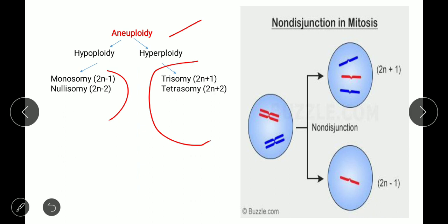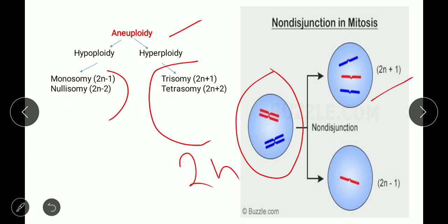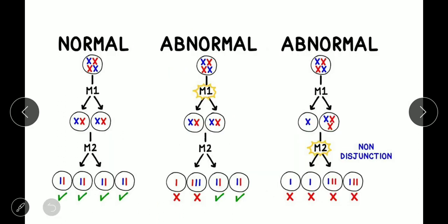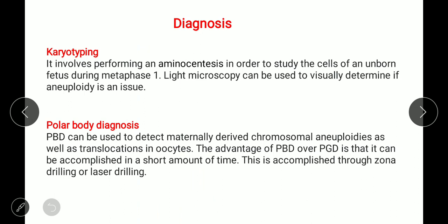In non-disjunction during anaphase, by the end of telophase two daughter cells form. Normally cells have 2n chromosomes, but due to non-disjunction one cell gets 2n+1 and the other gets 2n−1. This results in daughter cells with an abnormal number of chromosomes.